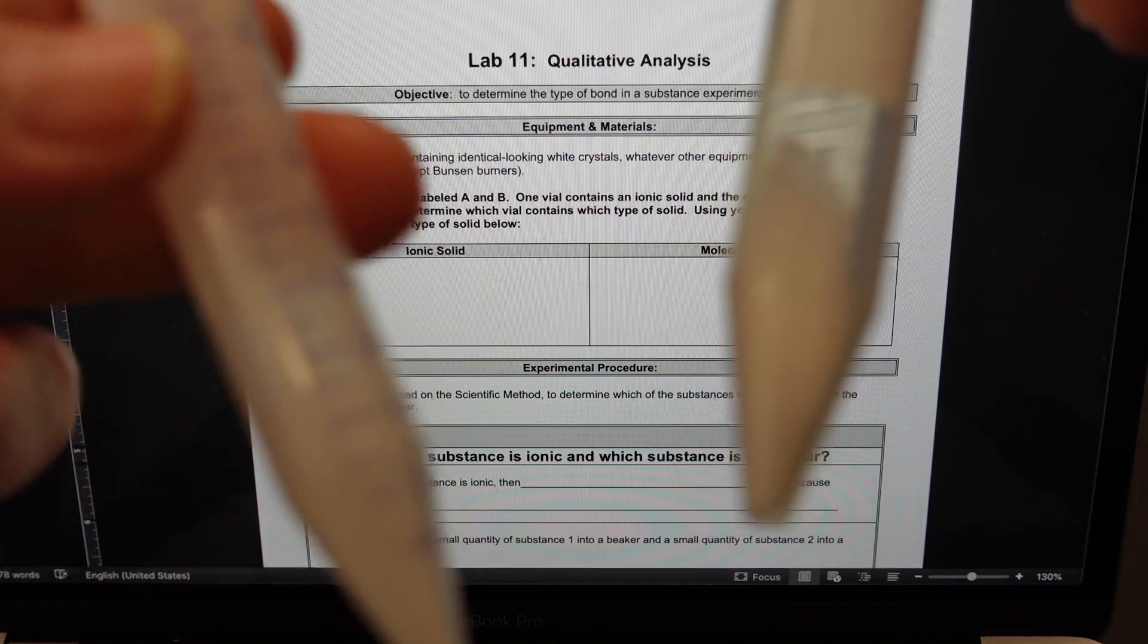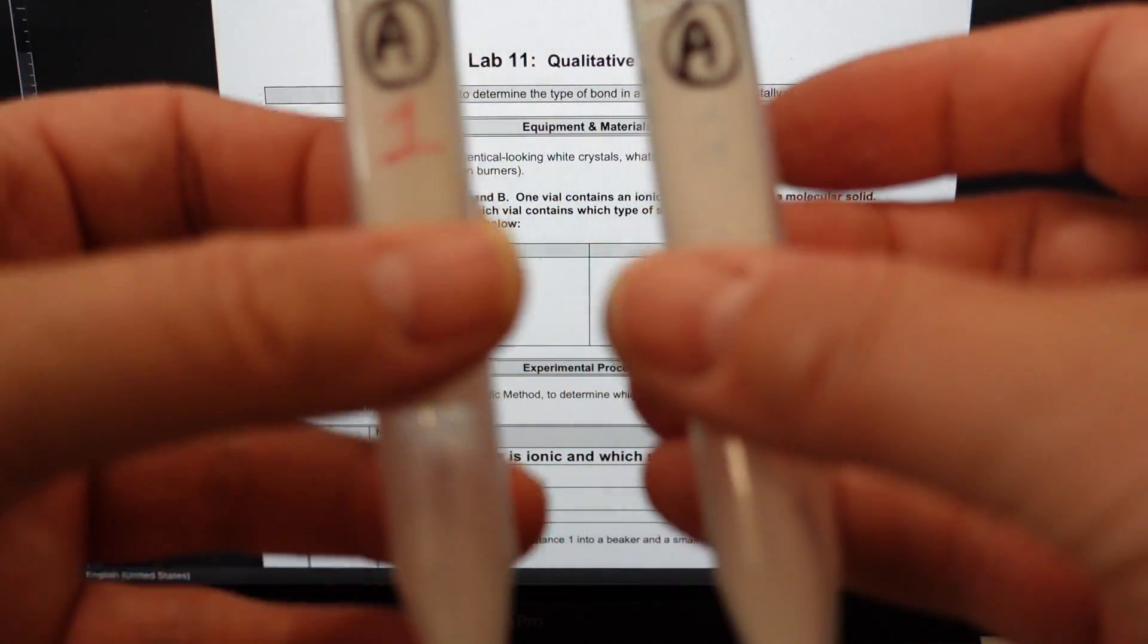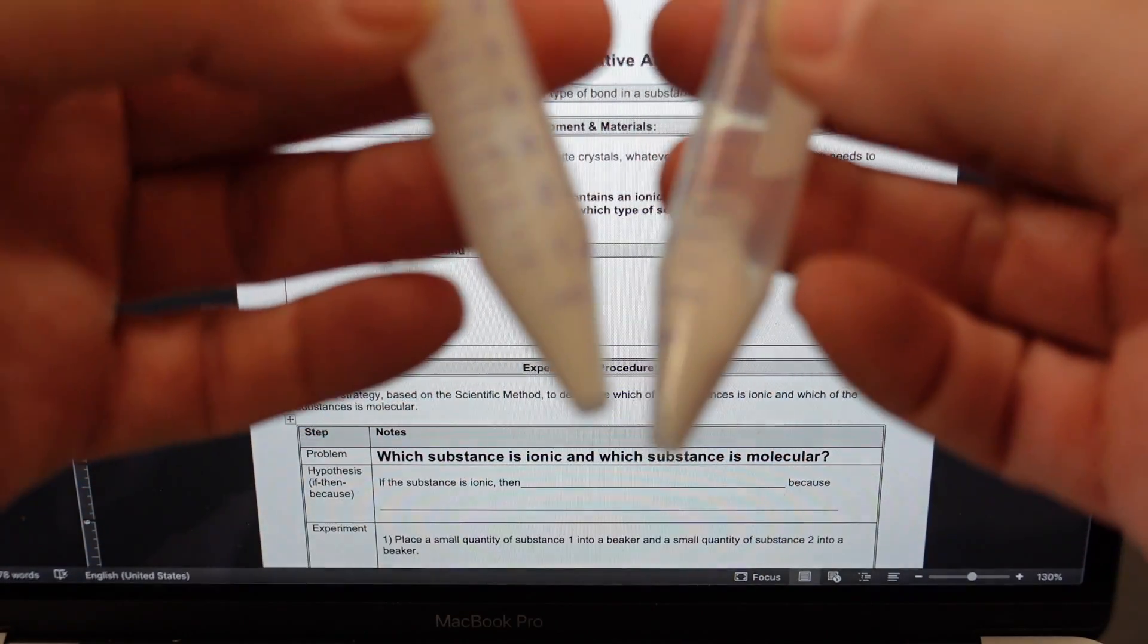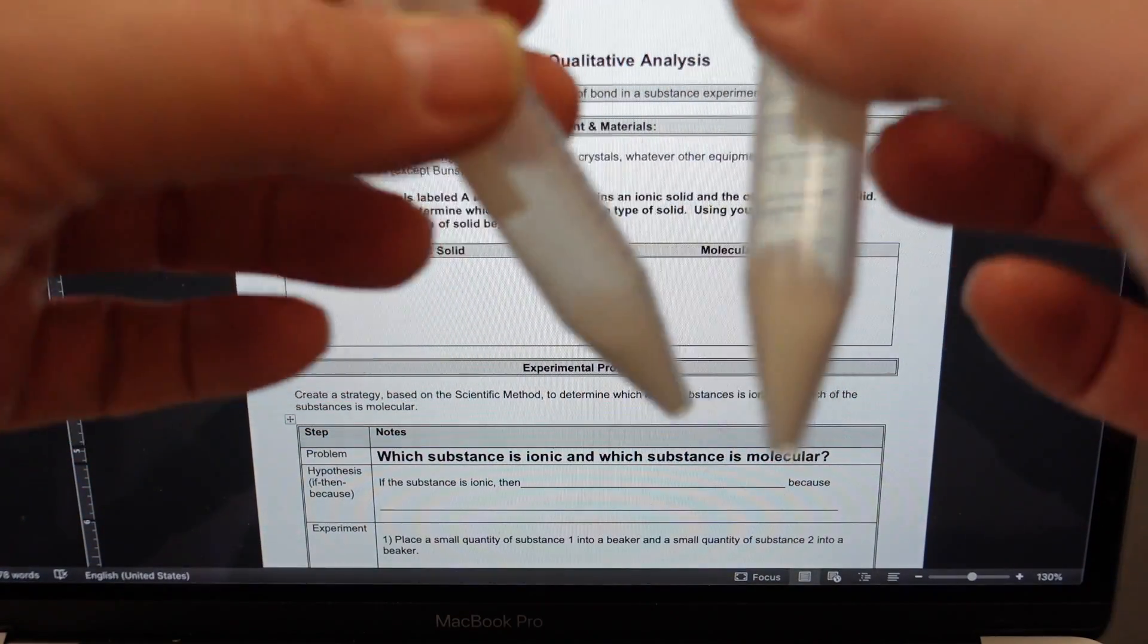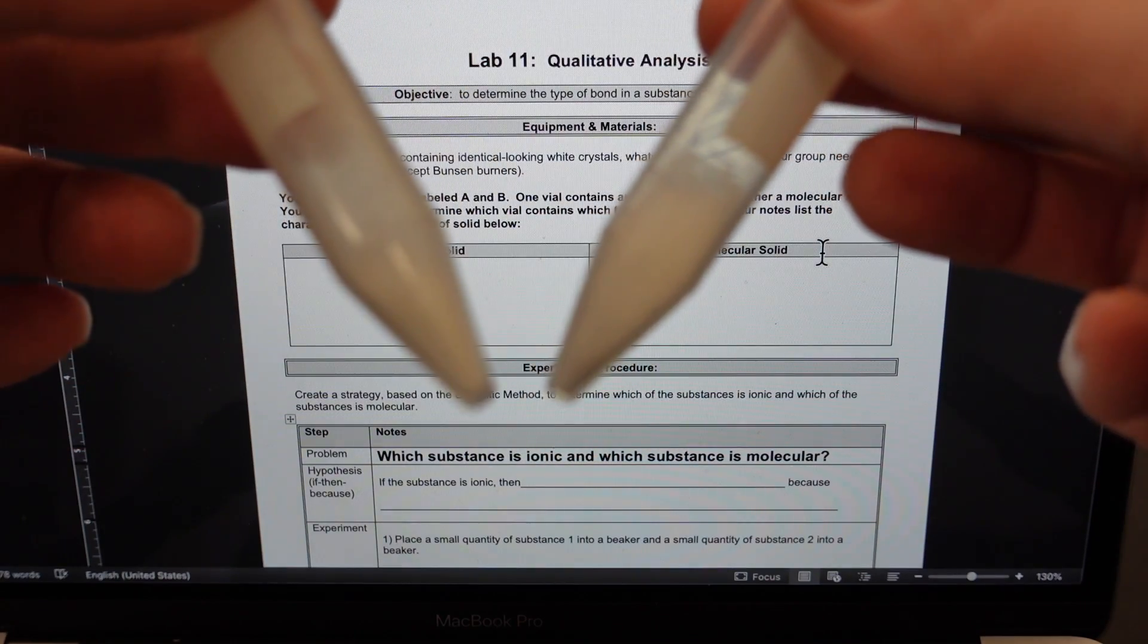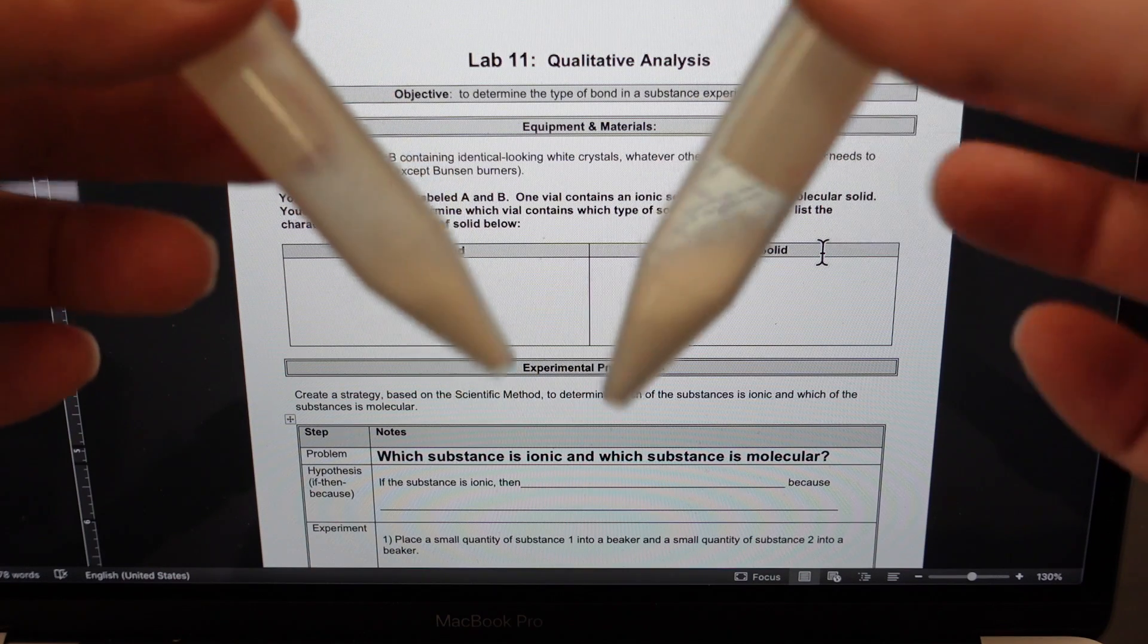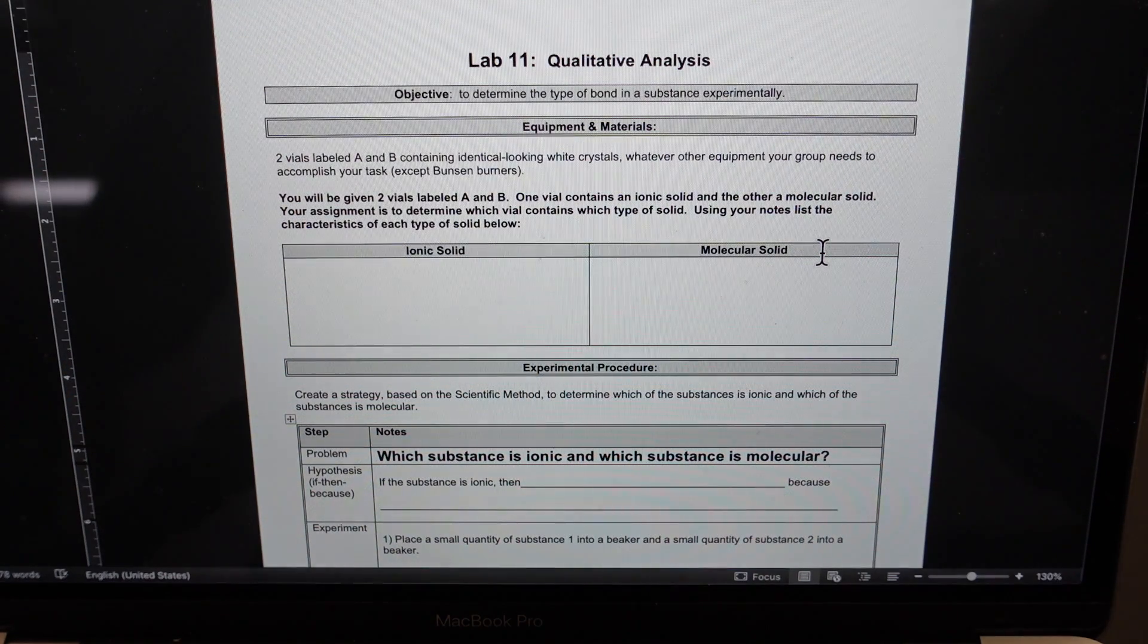So here's the deal. I have two tubes. I have tube one and I have tube two. And in each of these I have a nearly identical looking white crystalline solid. One of them is ionic, the other one molecular. More specifically, one of them is sugar and one of them is salt.